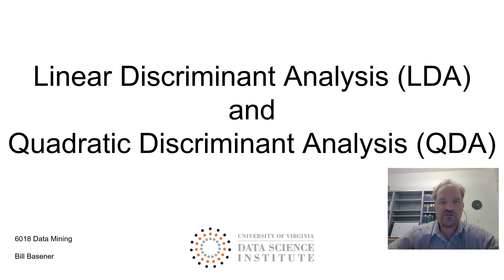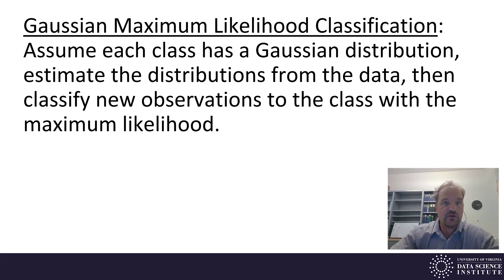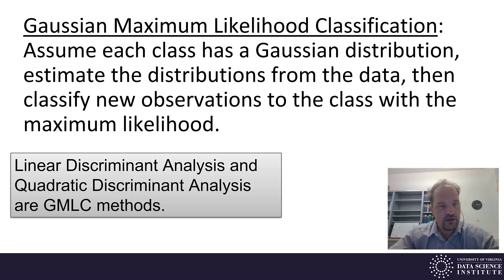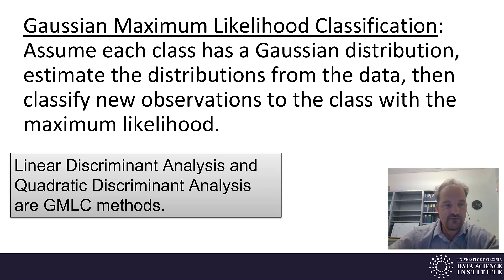Welcome to the lesson video on linear discriminant analysis and quadratic discriminant analysis. In this lesson video we're going to talk about these two methods, which are Gaussian maximum likelihood classification methods. In Gaussian maximum likelihood classification we assume each class has a Gaussian distribution, estimate the distributions from the data, then classify new observations by assigning them to the class with the maximum likelihood.